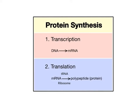Cells spend a lot of their time and energy making proteins in a process called protein synthesis. Proteins are manufactured in two busy steps: transcription followed by translation. In transcription, a gene on DNA is copied or transcribed onto a molecule of RNA called messenger RNA, symbolized as mRNA. The message is the gene's instructions on how to make the protein.